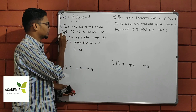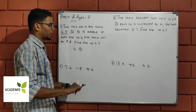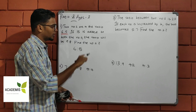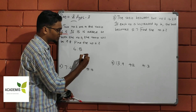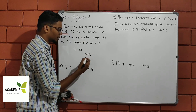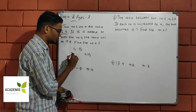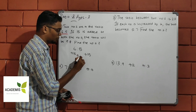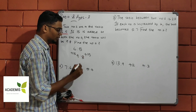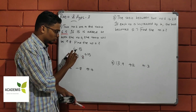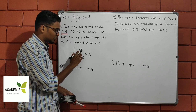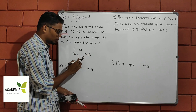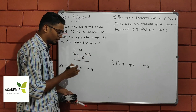The two numbers are in the ratio 6 is to 5. If 15 is added to both numbers, the ratio becomes 9 is to 8.